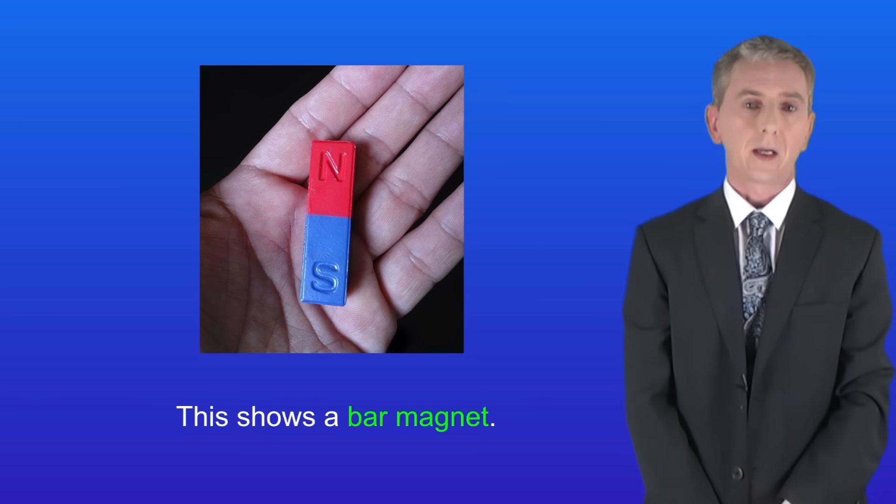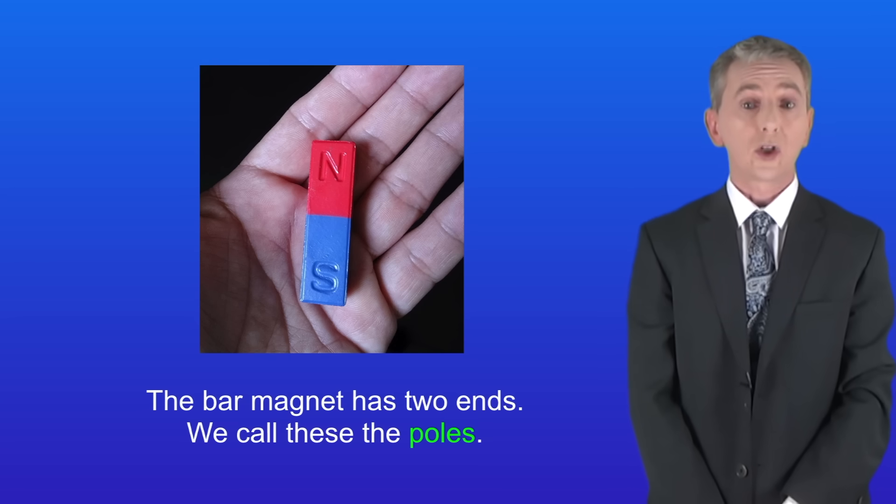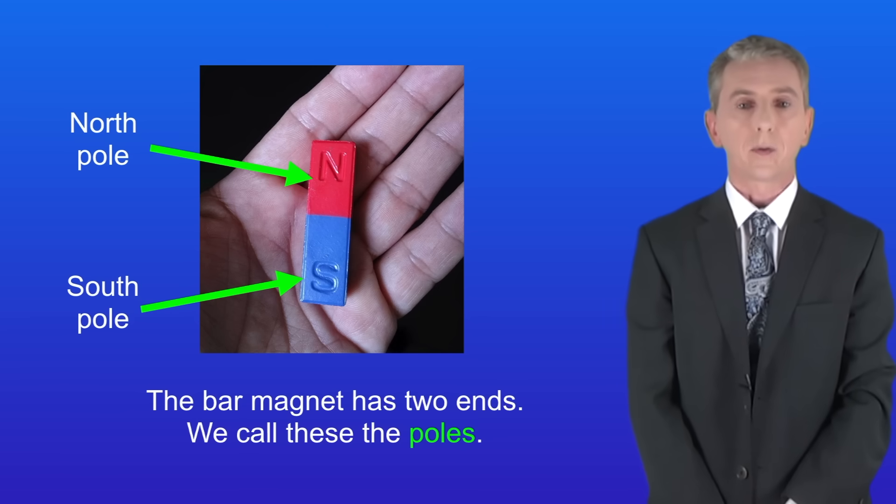I'm showing you here a bar magnet and you may have seen one of these at school. As you can see the bar magnet has two ends and we call these the poles. So we've got a north pole and a south pole.